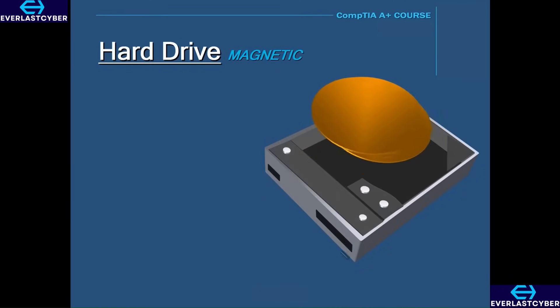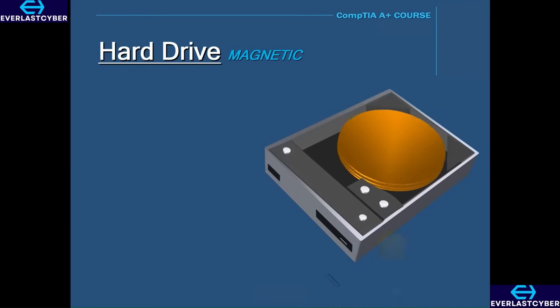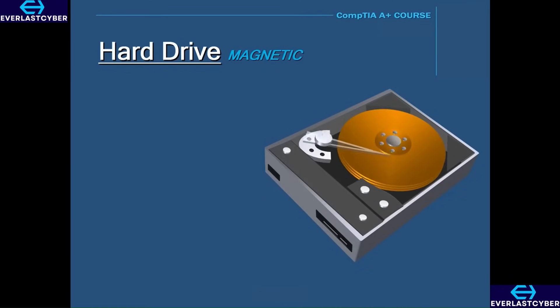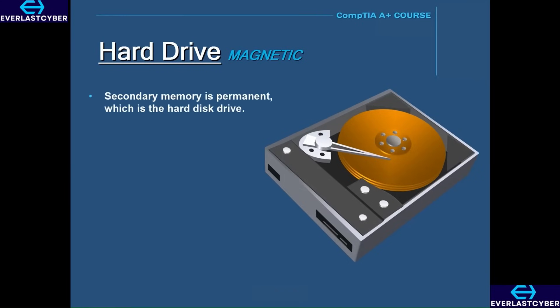A computer has two types of memory: primary memory and secondary memory. Primary memory is temporary, which we will talk about later. The secondary memory is permanent, and this deals with the hard disk drive.